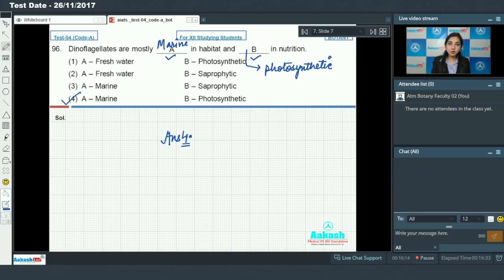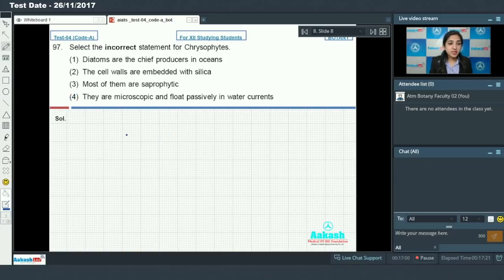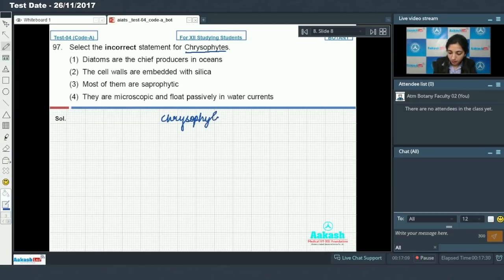Moving on to the next question, that is question number 97. Question number 97 says select the incorrect statement for chrysophytes. You all know that chrysophytes are the protists which includes diatoms as well as desmids. Now you have to identify the statement which is incorrect for both diatoms as well as desmids.